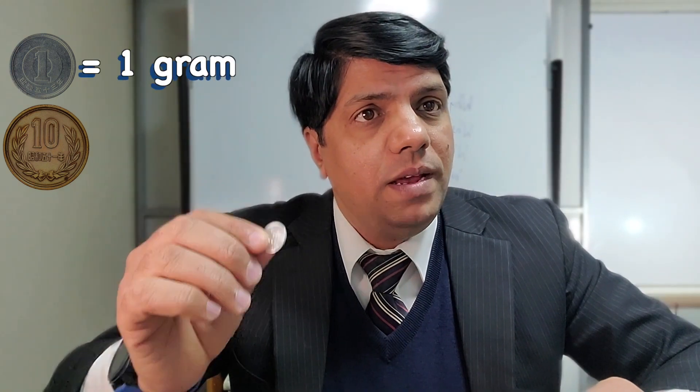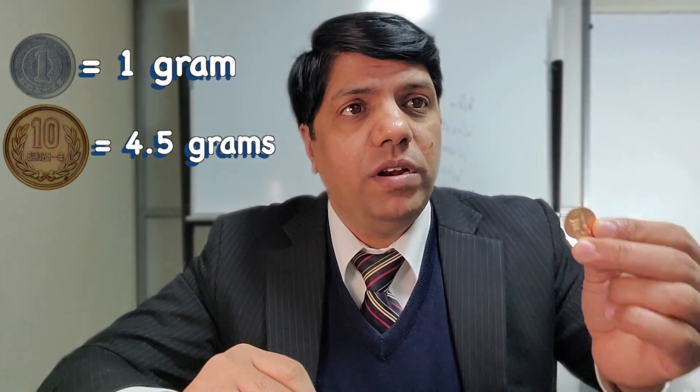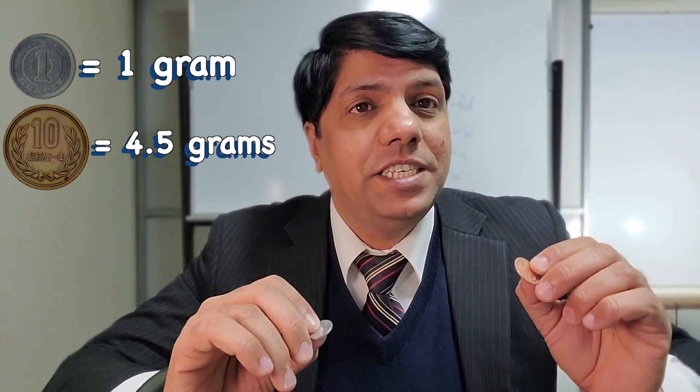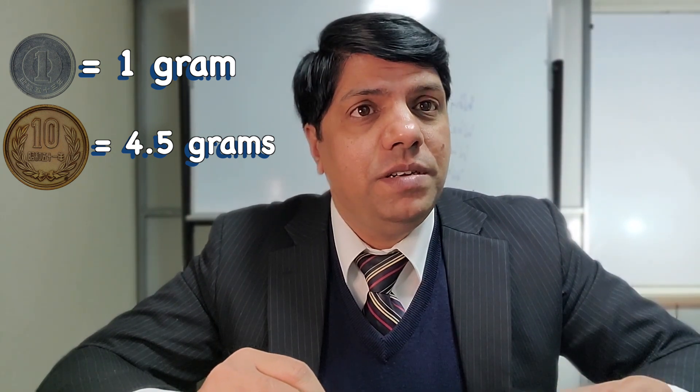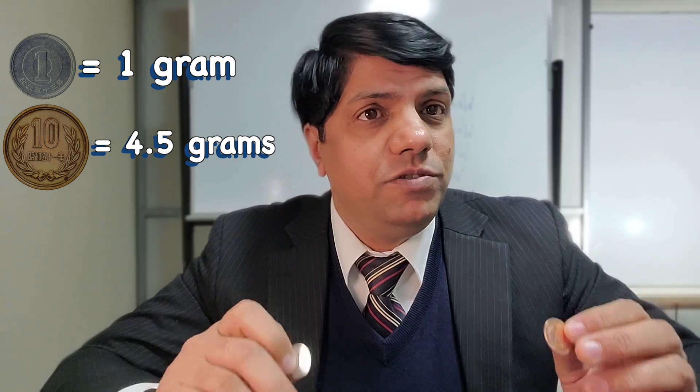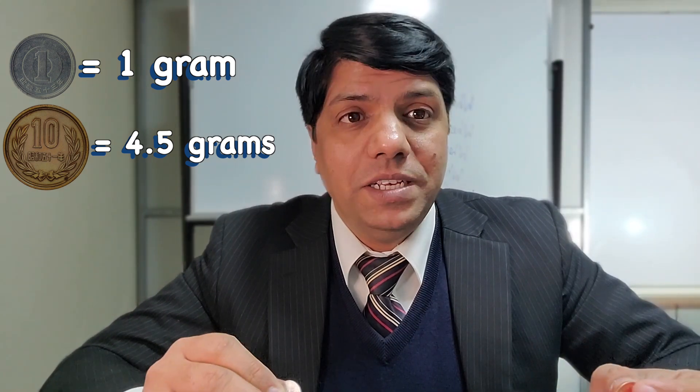And so I went to the government website to see what the actual weights of the 1 yen coin and 10 yen coin are. And the government website says the weight of a 1 yen coin is actually 1 gram. And the weight of a 10 yen coin is actually 4.5 grams. That's exactly what we measured a few moments ago with our rudimentary balance. Isn't that amazing? Amazing.